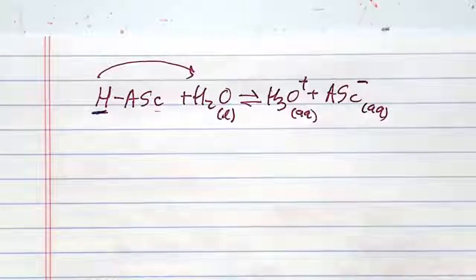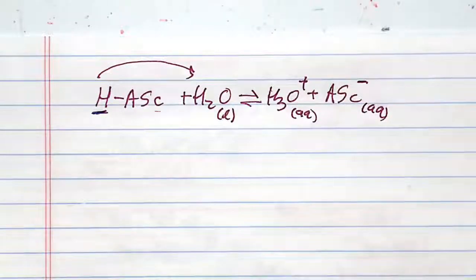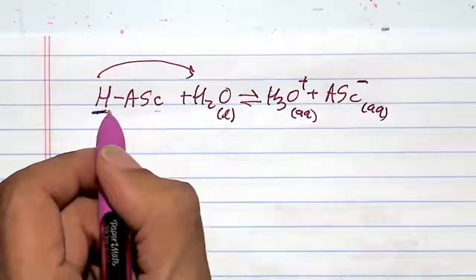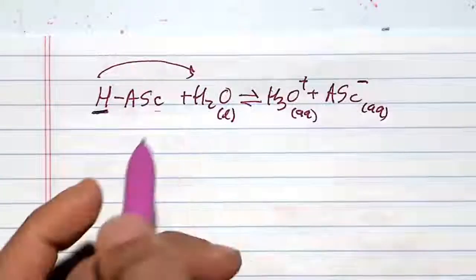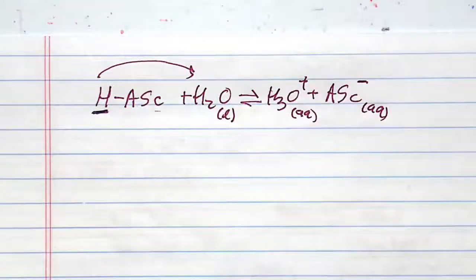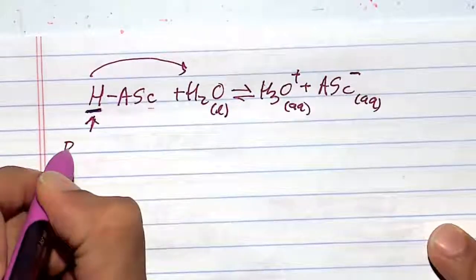Acetylsalicylic acid has a pKa of 3.5. We really don't need to know the structure of acetylsalicylic acid. Notice the pKa of this proton is 3.5.